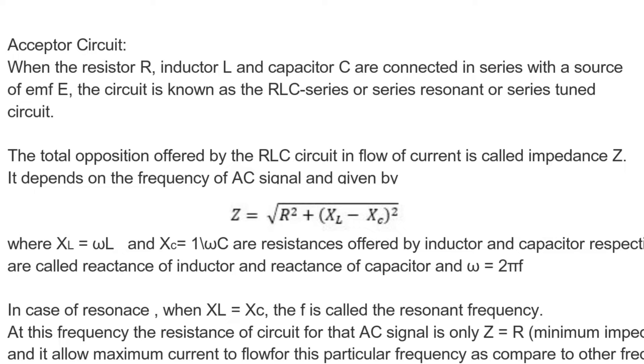In case of resonance, when XL is equal to XC or omega L is equal to 1 upon omega C, the particular frequency is called the resonant frequency.